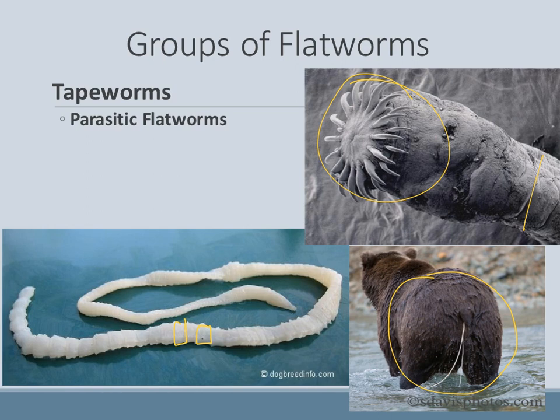The proglottids expand and grow from behind the head, getting very long to the point of dangling out the anus of the host. In bears, this dangles into the water and attracts fish to bite off and consume a segment. Because each segment has all the reproductive structures, it can reproduce inside the fish and make eggs, and then the bear eats the fish and starts the process all over again.